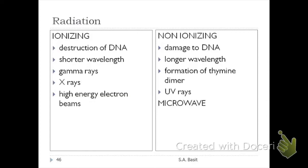There are two types of radiation: ionizing and non-ionizing. The basic difference is that ionizing radiation destroys DNA, while non-ionizing radiation simply causes damage to DNA. Ionizing radiation uses shorter wavelengths such as gamma rays, X-rays, or high-energy electron beams. Non-ionizing radiation does not destroy the DNA — it just damages it. One indicator that DNA is already damaged is the formation of thymine dimers.